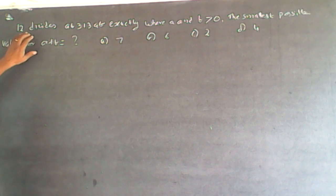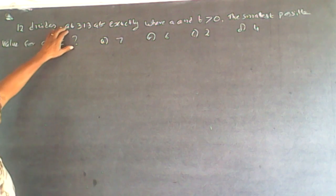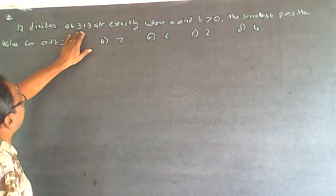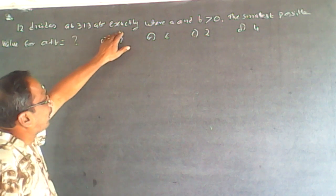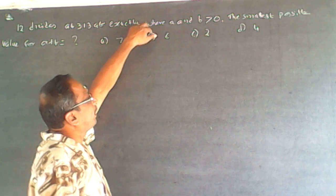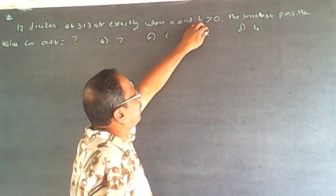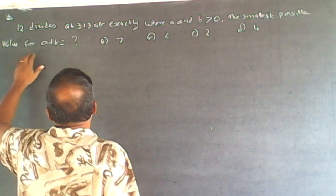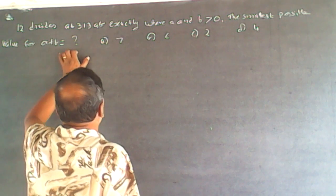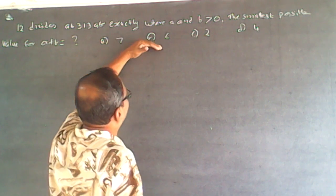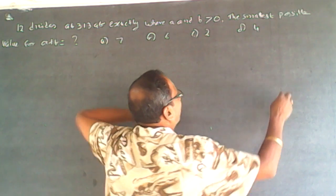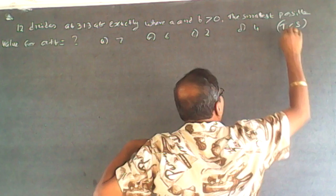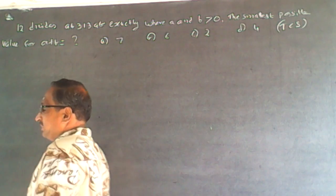The question is: 12 divides AB313AB. It's a 7-digit number AB313AB exactly, where A and B are greater than 0. The smallest possible value for A plus B is to be found. This question has been asked in PCS.